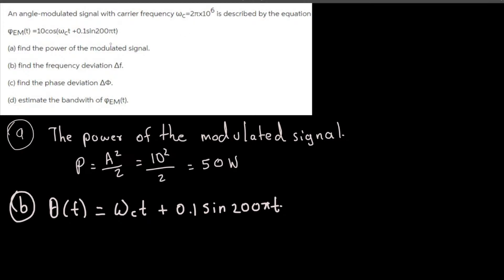From θ(t), we can find the frequency of the message signal. If we express 205t in terms of 2πf_m·t, then f_m = 205/(2π) ≈ 100 Hz.